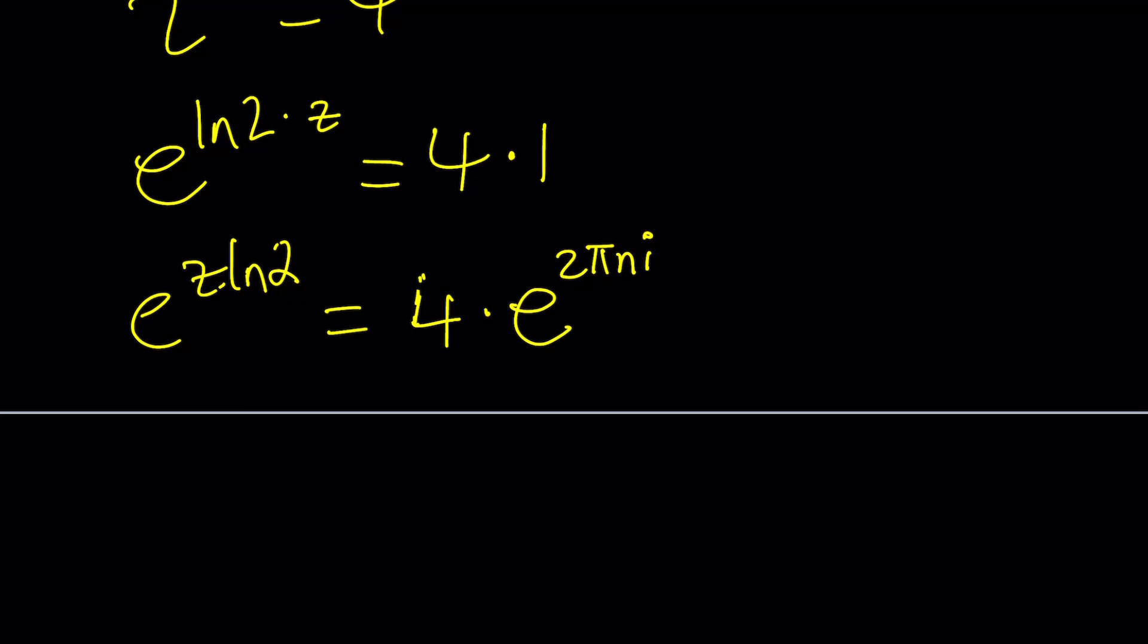And by multiplying it by 4, I'm basically taking care of the modulus. Because in this case, notice that it's written in the form r e to the i theta. So 4 is going to be r. Make sense?